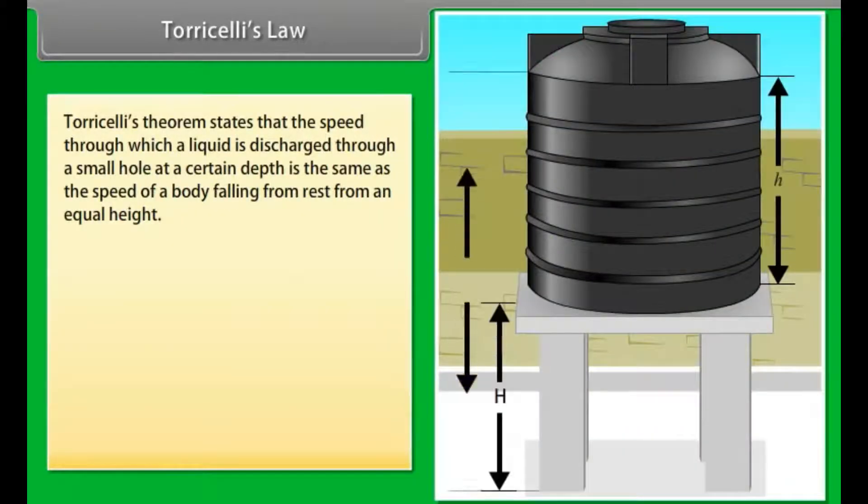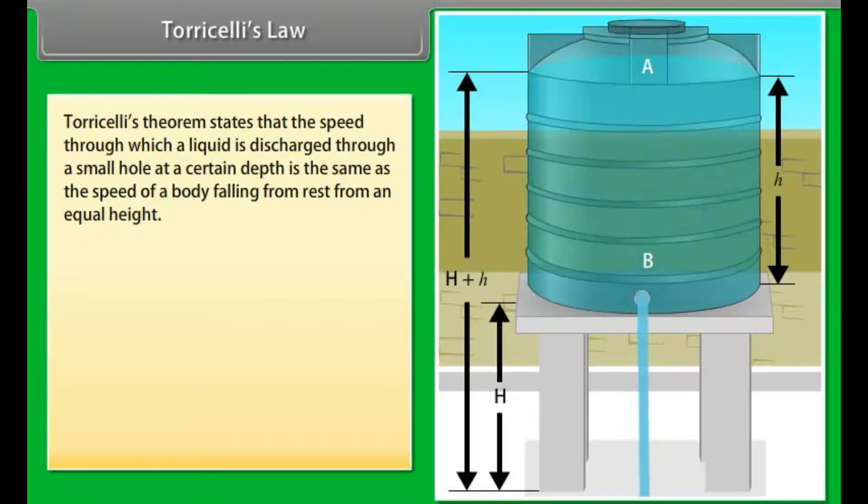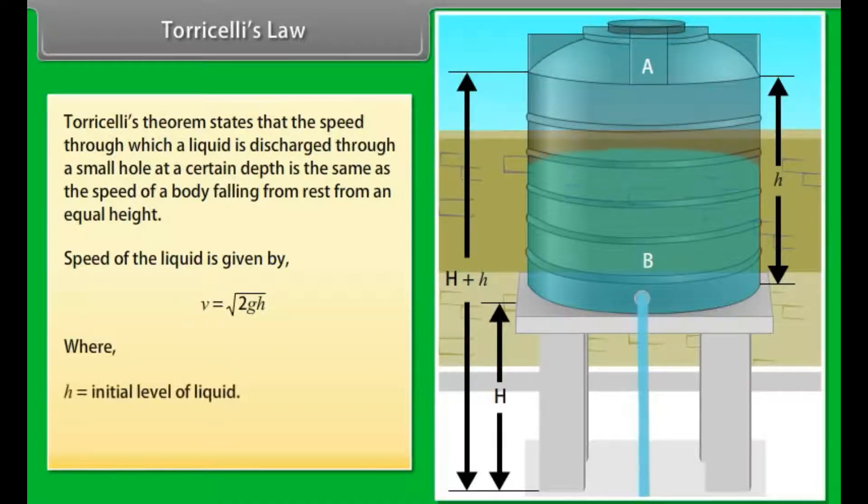Torricelli's law. The speed through which a liquid is discharged through a small hole at a certain depth is the same as the speed of a body falling from rest from an equal height. Speed of the liquid is given by V = √(2GH), where H is the initial level of liquid and G is the gravity constant.